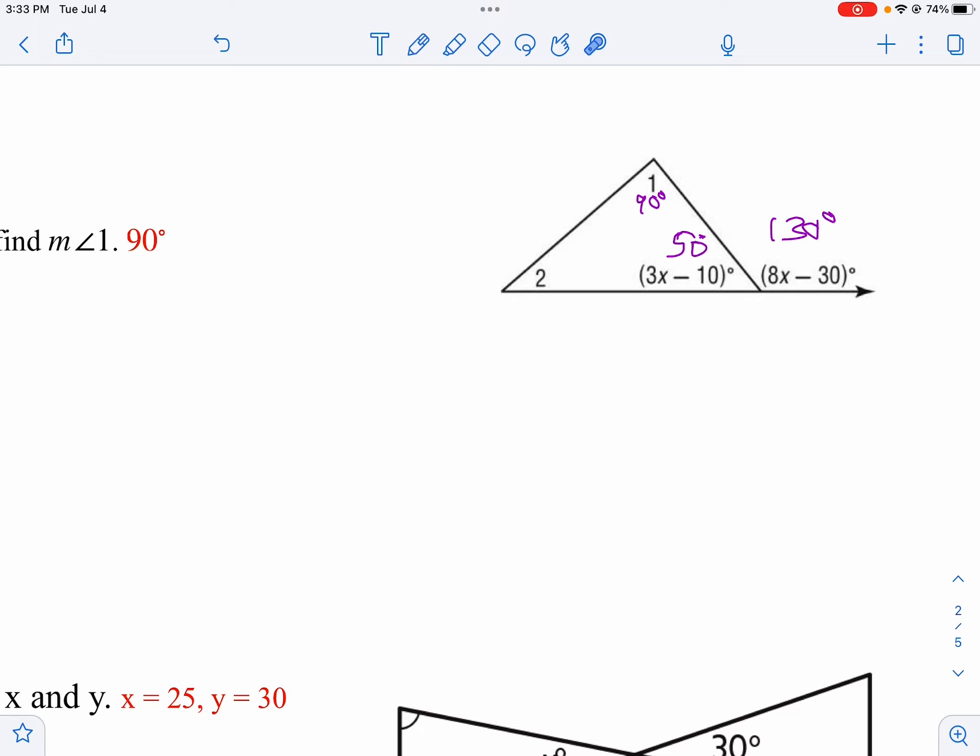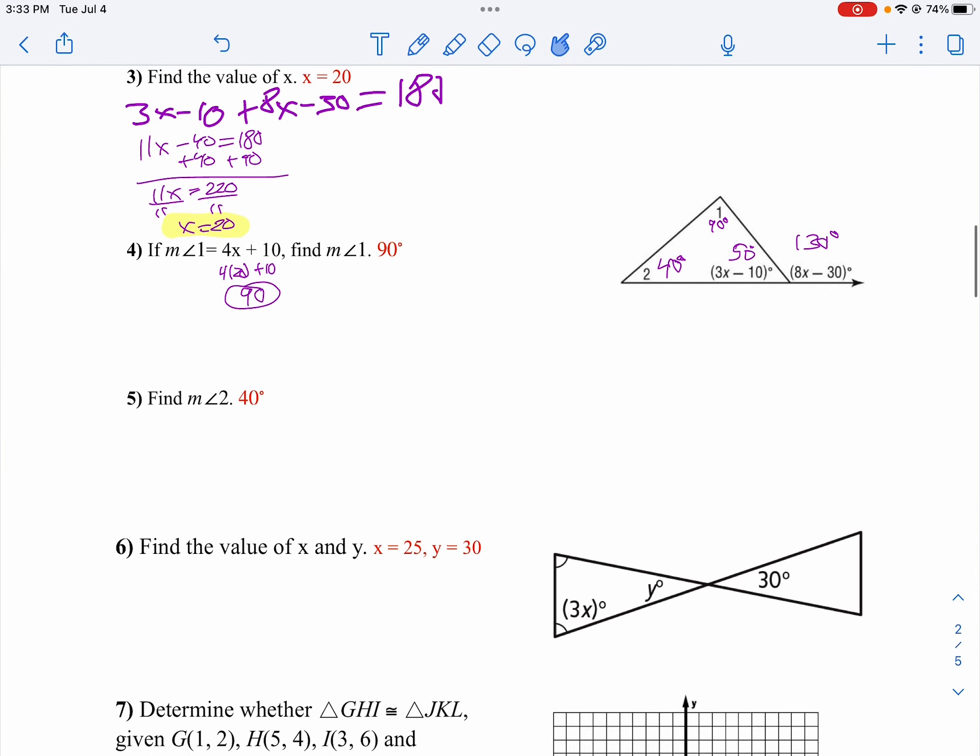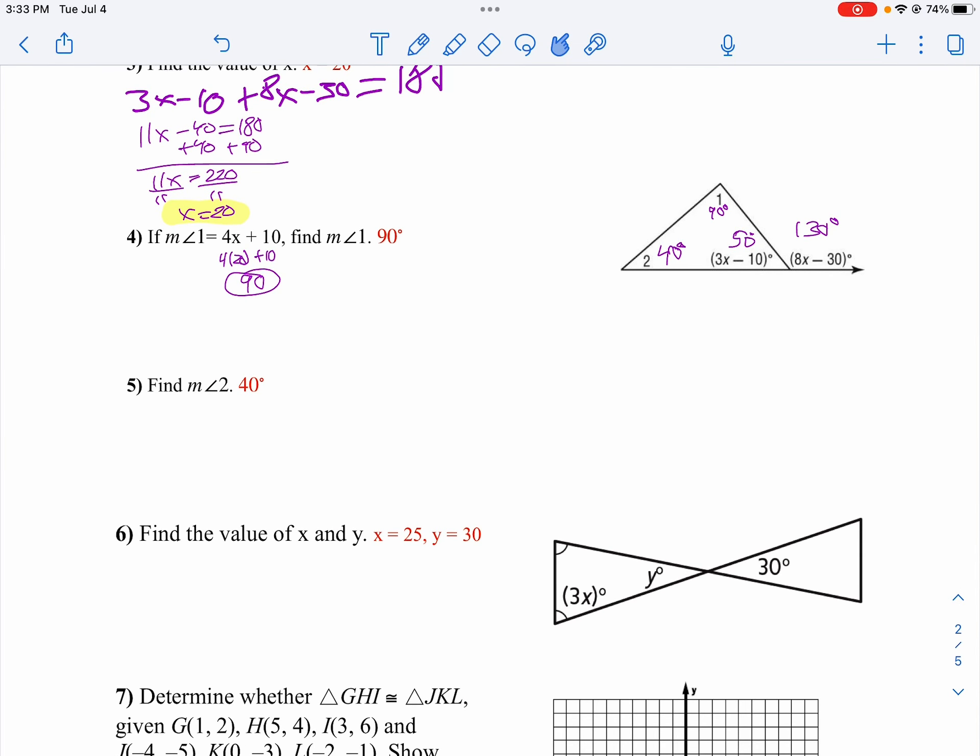Now we can use the fact that it's 180 degrees in a triangle to find angle 2. 50 plus 90 is 140. So angle 2 is 40 degrees. Or I like to think 40 plus 50 gives me 90 because I know those two angles have to be acute or complementary. And there is your answer.